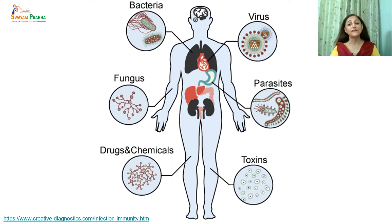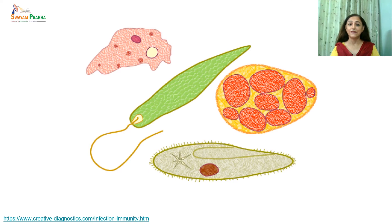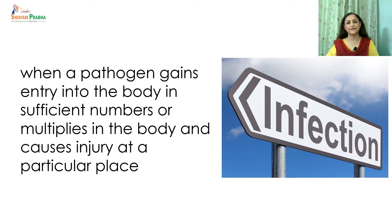Along with some beneficial microorganisms, there are some microbes which have pathogenic effects on us. They can be divided into five major categories: viruses, bacteria, fungi, protozoa, and helminthus. When a pathogen gains entry into the body in sufficient amount or multiplies in the body and causes injury at a particular place, we call it infection.